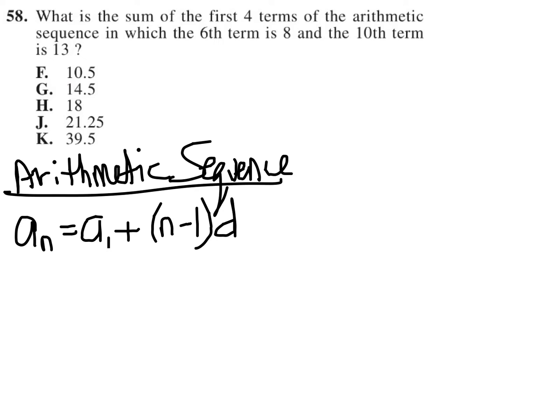The question tells us that the sixth term is 8, so I know that a_6 equals 8. So 8 equals a_1 plus, n is 6 since we're at the sixth term, so 6 minus 1 is 5, so I get 5d.